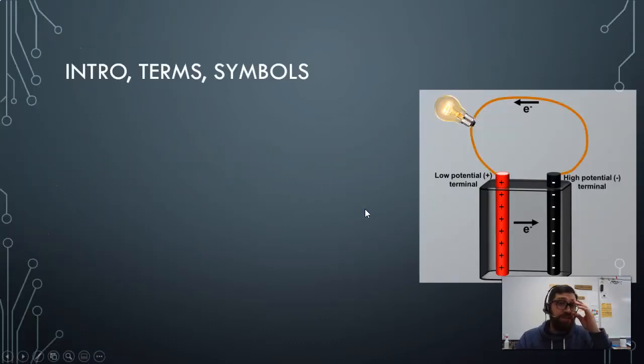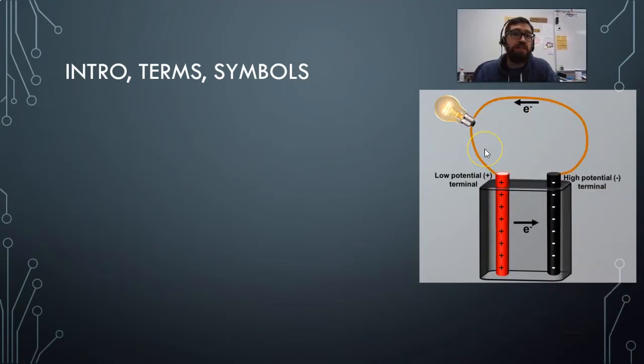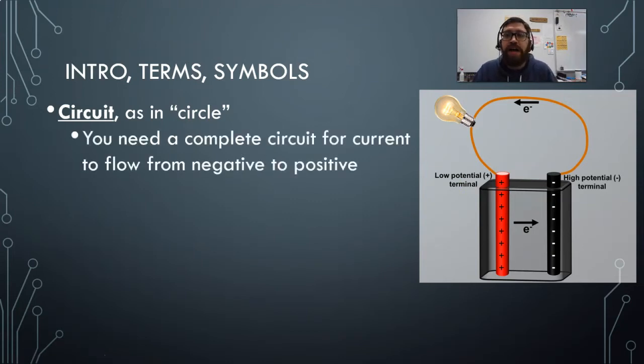First, as an introduction, there's some terms that you need to know that we haven't introduced before. On the right-hand side, you see this picture of the battery that we used in the last section when we talked about electrical current. Remember, in a battery, we've got work being done on electrons. They gain electrical energy here, and then they go through this wire because they spontaneously move from negative to positive, and they use that electrical energy.